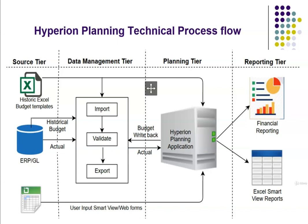It also gives you an idea of what technical components are involved in a Hyperion planning project. This technical process flow has four layers. From left to right: source layer, data management layer, planning layer, and reporting layer.